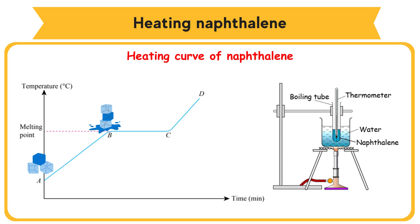The heat energy is used so that the solid can change to a liquid. At this temperature, both solid and liquid are present. At point C, all the solid naphthalene has melted. From point C to point D, the particles in the liquid naphthalene absorb heat energy and move more rapidly. The temperature increases from point C to point D. At point D, the liquid starts to boil.